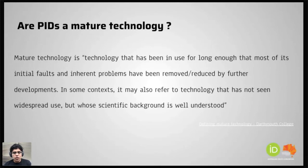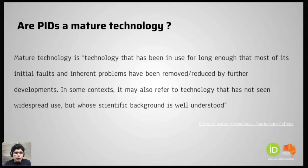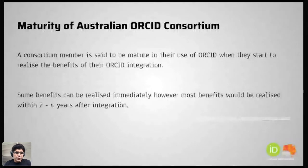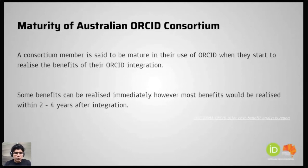So if this is the definition we look at, then the PIDs that I'm familiar with — like ORCIDs, DOIs, and even IGSs — they all qualify as mature PIDs. But my question is, should we be measuring the maturity of PIDs, or the maturity of an organization itself? Because in this presentation, what we're going to do is rather than focus on the maturity of PIDs, we're looking at the maturity of a community that is using persistent identifiers. In this particular case, it's the Australian ORCID Consortium as the community. And before we go ahead and measure what the maturity of the consortium is like, we need to understand and define what maturity is.